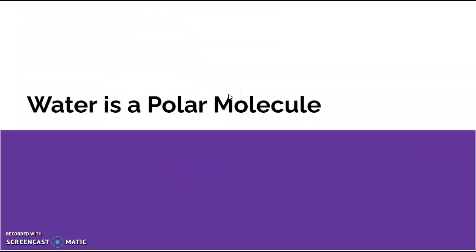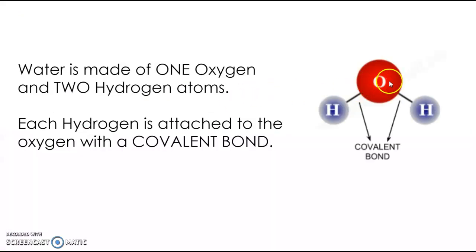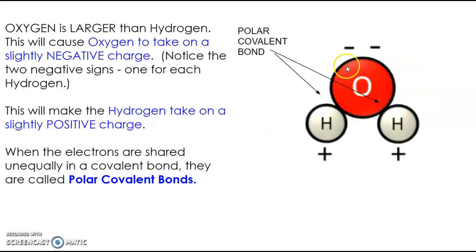So water is a polar molecule because it has polar covalent bonds. Water is made of oxygen and two hydrogen, and those hydrogens are held to the oxygens with covalent bonds. But because oxygen is so much larger, oxygen takes the electrons for a longer period of time. That gives oxygen the feeling of being negative and hydrogen the feeling of being positive.